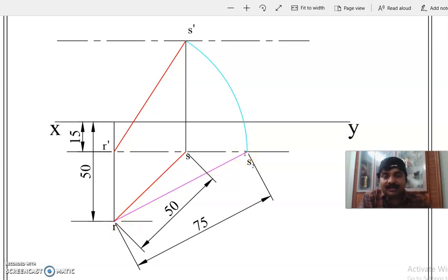Now partial address of endpoint S is given. S is 15mm in front of VP but it is above HP. How much above HP is not given.